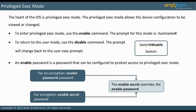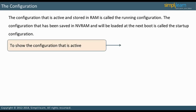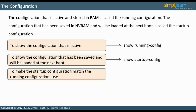Let us look into Configuration Mode in the next slide. The configuration that is active and stored in RAM is called the Running Configuration. The configuration that has been saved in NVRAM and will be loaded at the next boot is called the Startup Configuration. As configuration commands are entered, they become part of the Running Configuration. The only way to apply them also to the Startup Configuration is to copy the Running Configuration to the Startup Configuration. In some older IOS versions and other Cisco devices, the Write Erase command accomplishes this task.